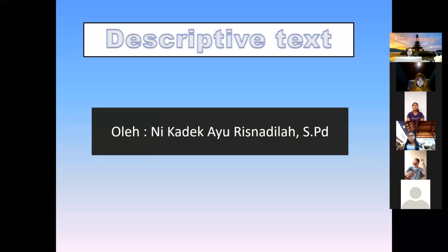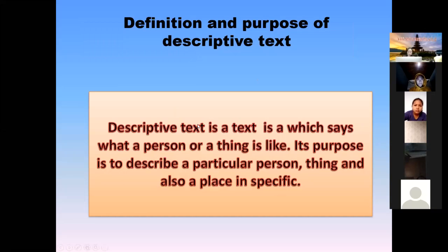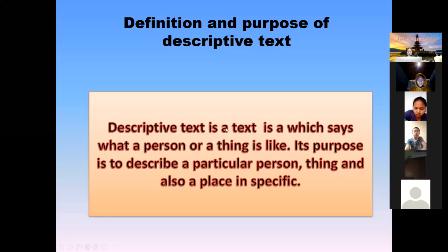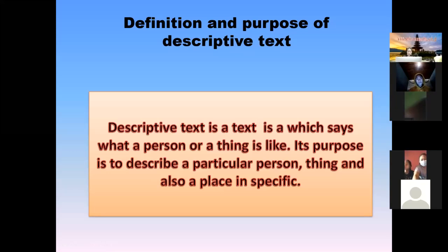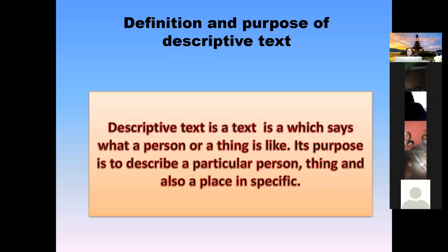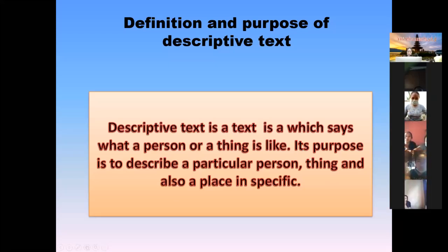Let's start from the definition and also the purpose of descriptive text. Descriptive text is a text which says what a person or thing is like. Its purpose is to describe a particular person, thing, and also a place specifically. Jadi descriptive text itu kalian menjelaskan tentang bagaimana keadaan suatu benda, seseorang — bagaimana physical appearance-nya — atau tempat secara spesifik.